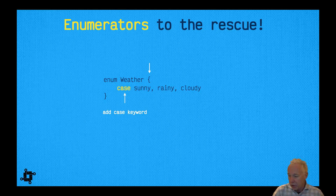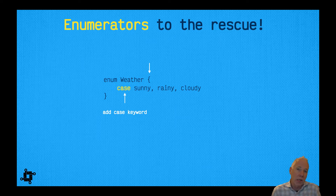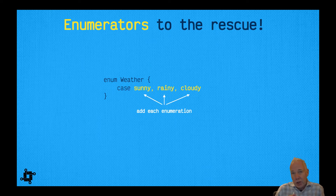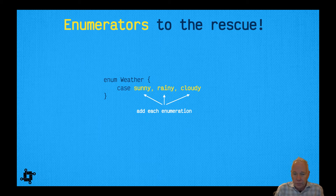Inside the open and closed braces, we put the core of our enumeration. We use the case keyword — there are all these different cases we can take into account. We're going to cover the case of sunny, rainy, or cloudy. You could imagine more: drizzly, windy — a bunch of different cases. That's why the keyword case is used. We've invented three cases here: sunny, rainy, and cloudy, which can be any meaningful words for your program.